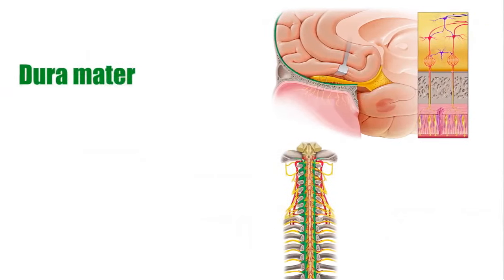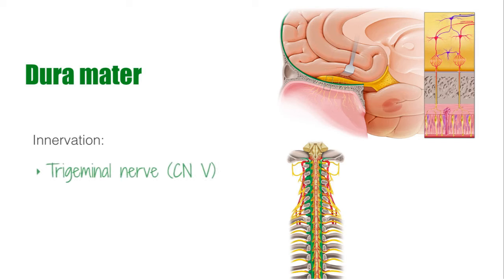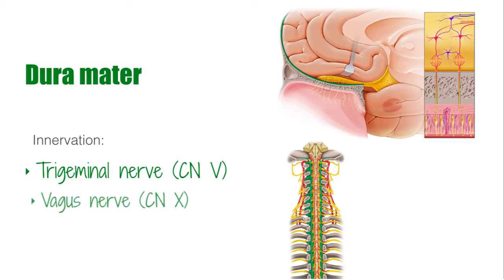The dura mater is innervated by branches of the fifth cranial nerve, the trigeminal nerve, as well as the tenth cranial nerve, the vagus nerve, and the first three cervical nerves, C1, C2, and C3.